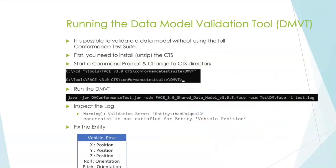We've done a little bit of data modeling. Granted, I haven't shown you how to build out the XML or how we're driving specific tools, but what we can do once we have some of that XML written, we can start doing a very simple validation using the DMVT. Unzip and install the CTS and then start a command prompt. We'll go into this FACE 3.0 CTS conformance test suite DMVT document, and then we'll actually run this command prompt here.